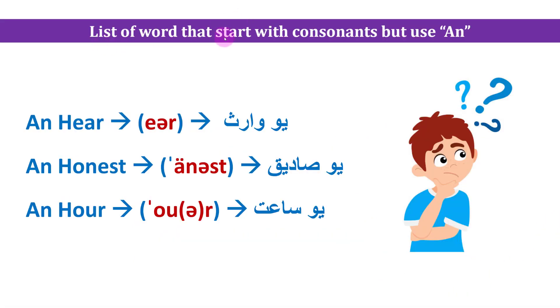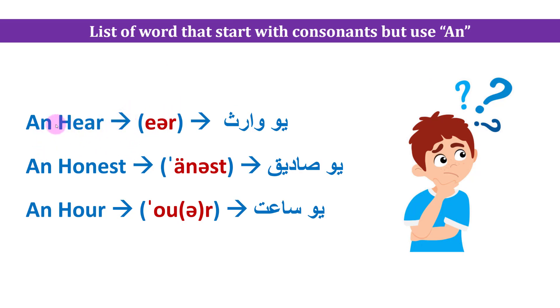List of words that start with a consonant but use 'an'. If you want to hear it, you will hear it. An ear — 'ear' starts with a vowel sound.